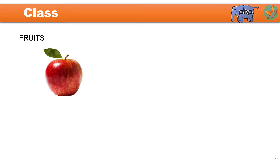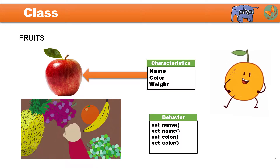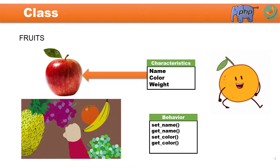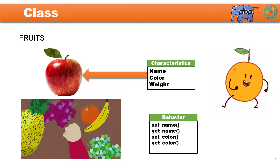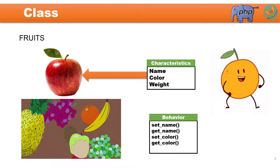Let us take one more example of a class — that is fruits. As you can see, this is one apple. It has name, color, and weight. These are the features of this particular fruit. Similarly, there could be behaviors such as set name, get name, set color, or get color. So both this car as well as fruit represent a class.